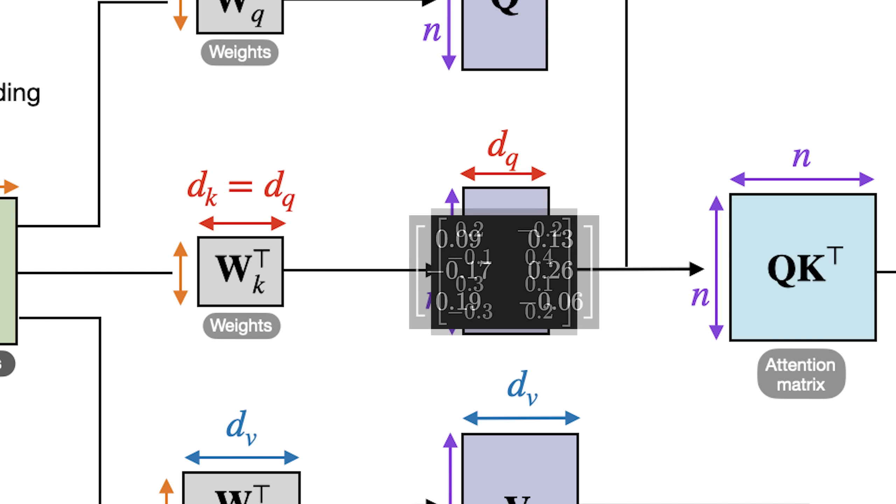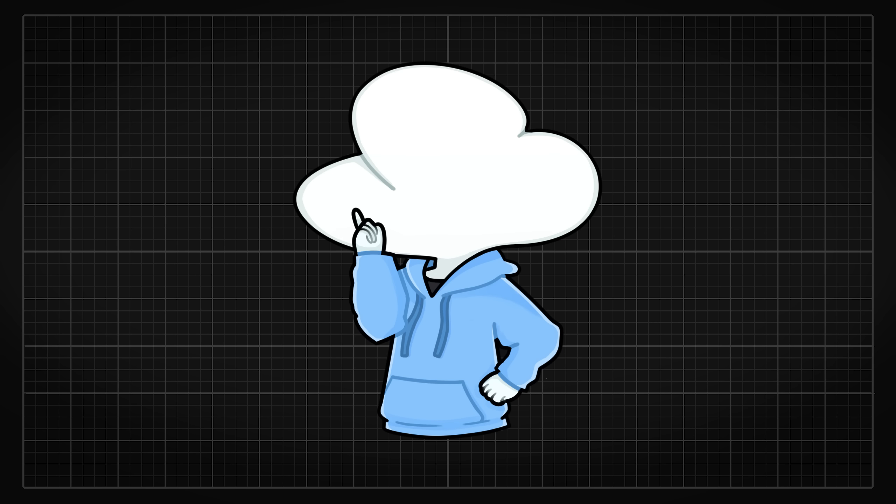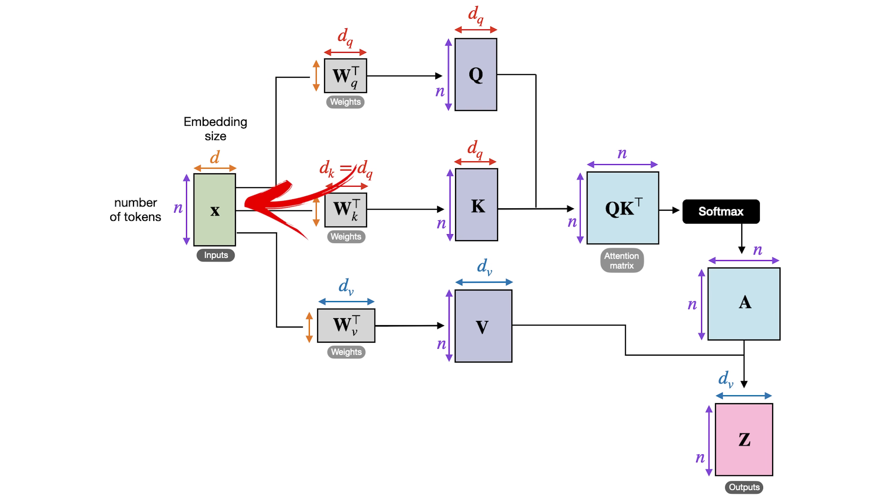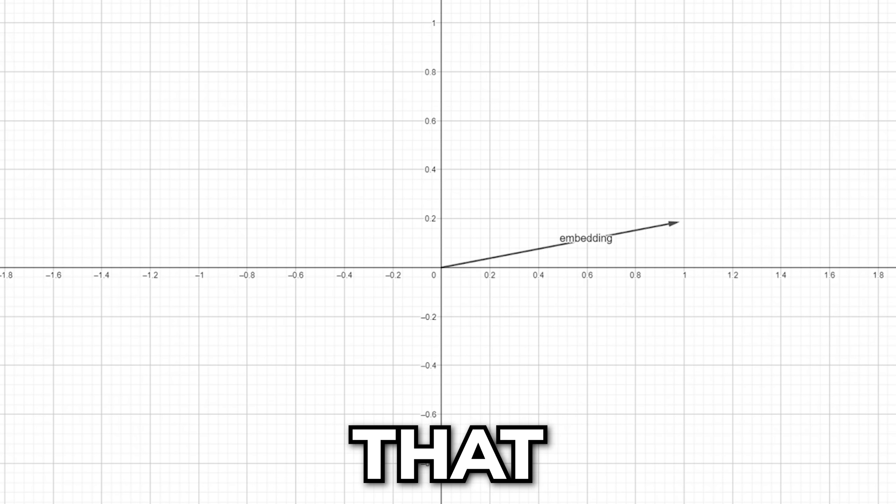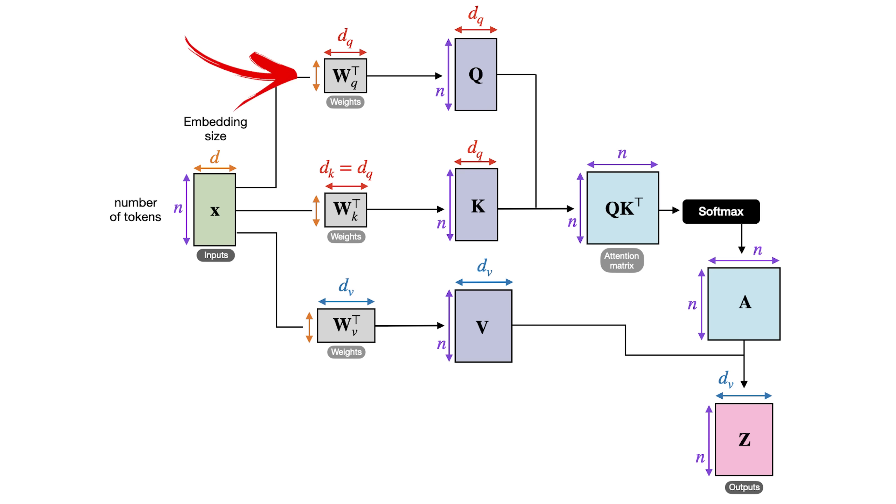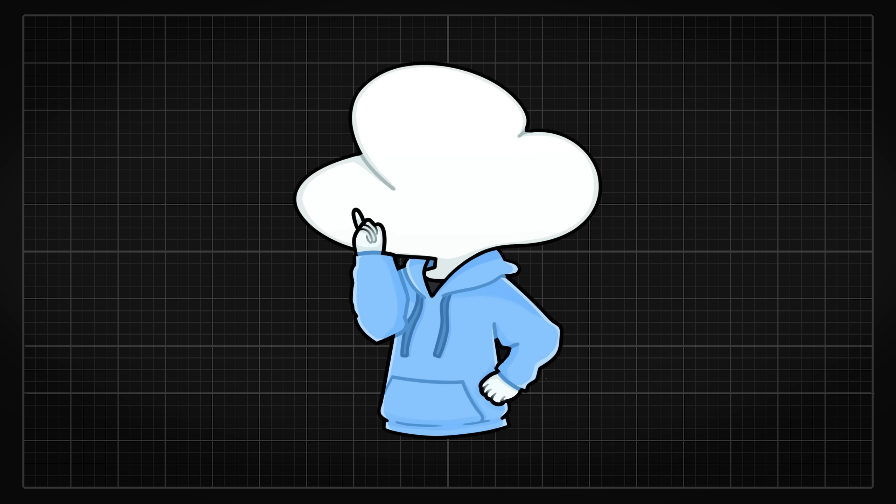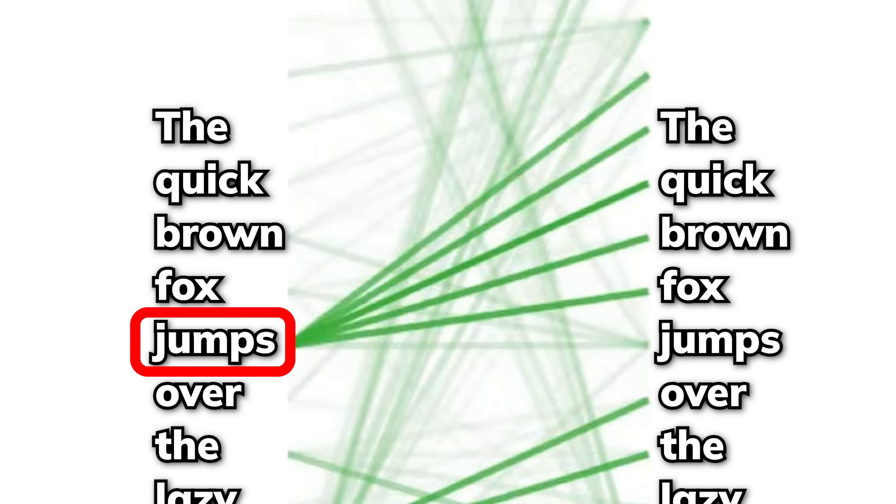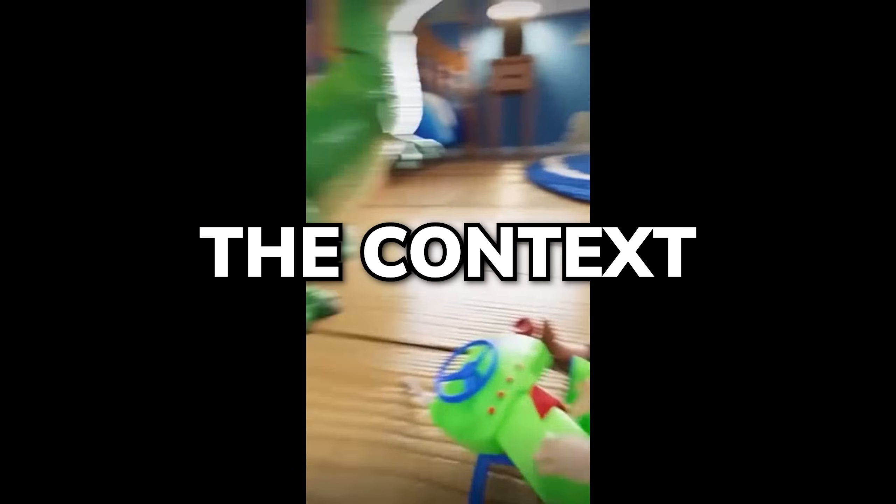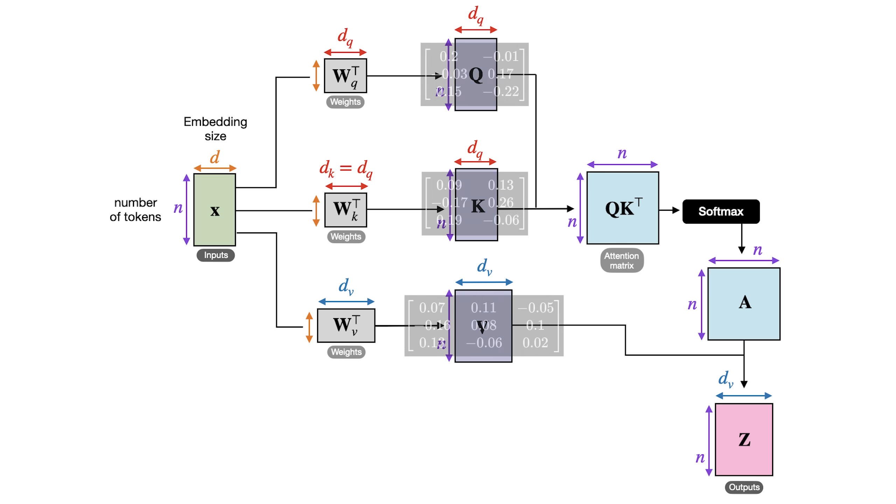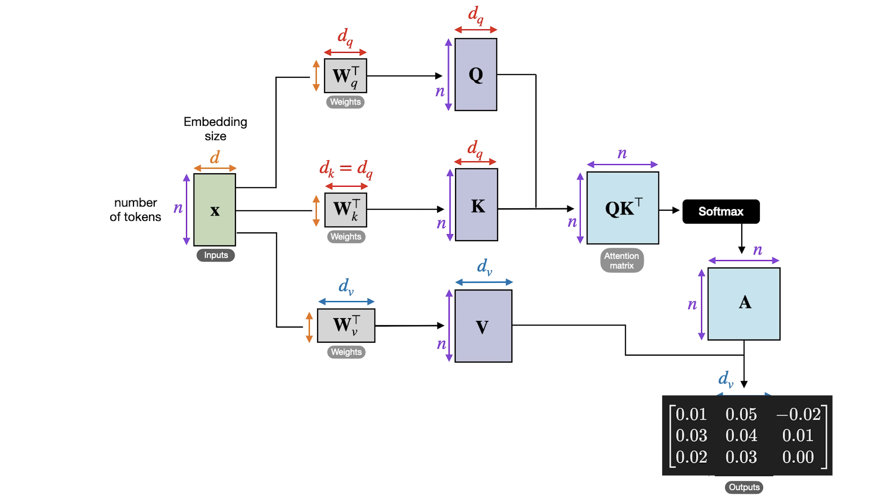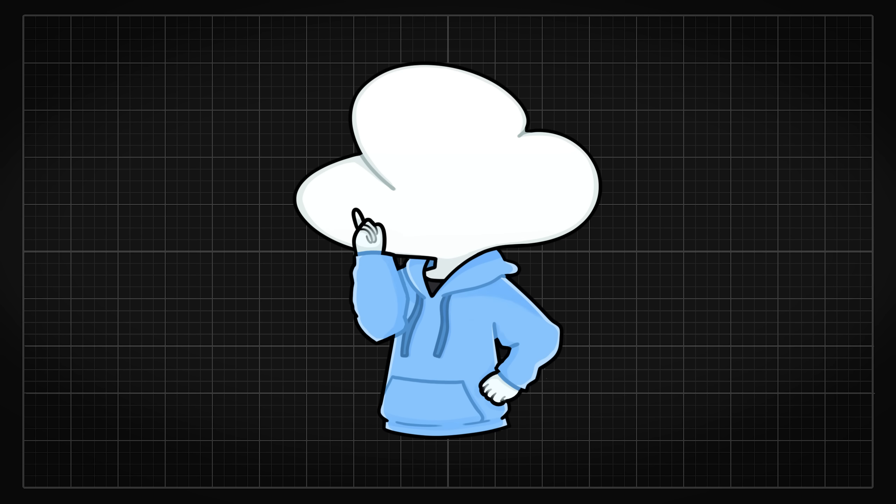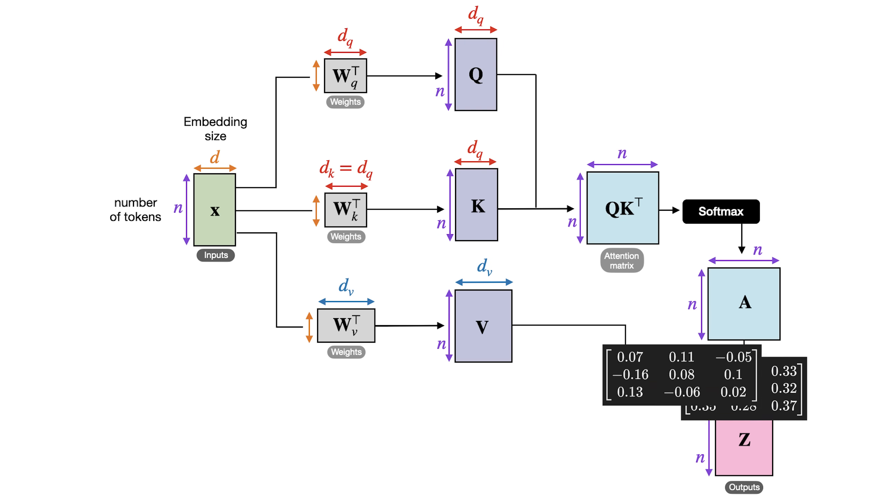But where does this KQV vectors come from? So they are actually generated through trainable weight matrices that are multiplied by the input embeddings. The input embeddings is a fixed length of vector that encodes a token's semantic meaning. As for the trainable weights, by pre-training it with a large amount of text, it learns to determine how each token should interact with the others within a context, hence assigning the values to KQV so the model would be able to give attention to the right tokens after some calculations. So when people say that attention can look at every position and decide which one is the most contextually important, this is how it achieves that.